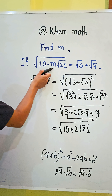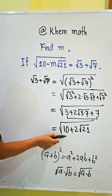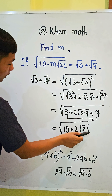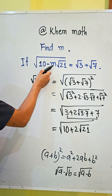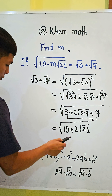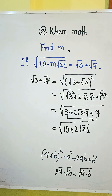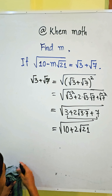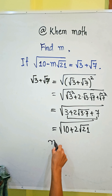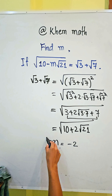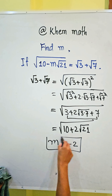Comparing both sides: the left side has 10 minus m times square root 21, and the right side has 10 plus 2 times square root 21. So negative m equals 2, which means m equals negative 2 is our answer.